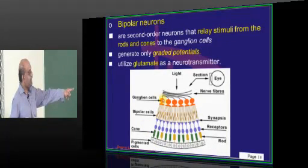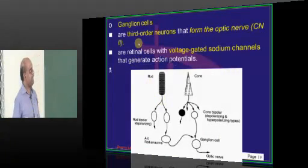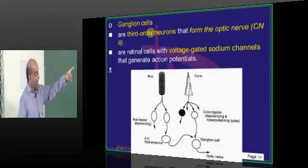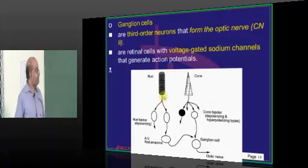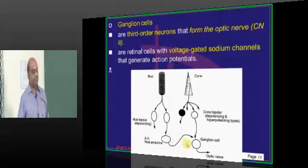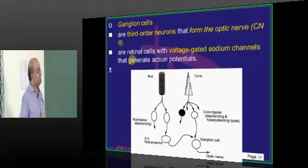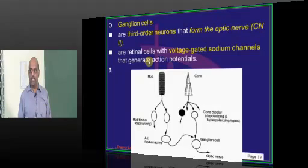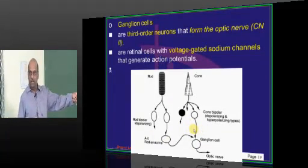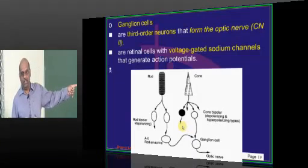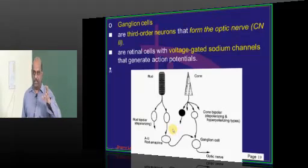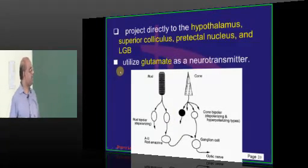After the bipolar cells, everything merges onto the ganglion cells, which are the third order neurons. The axons of these ganglion cells form the optic nerve. If you look at ganglion cells, they are those retinal cells which have a voltage-gated sodium channel and they produce action potential. So what will photoreceptors produce? Graded potential. Bipolar cells? Graded potential. But it is the ganglion cells that produce action potential and have voltage-gated sodium channels.